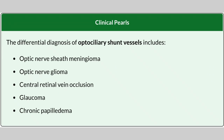The differential diagnosis for optociliary shunt vessels: the most important cause is optic nerve sheath meningioma. The second is glioma. They can also be seen in central retinal vein occlusion, glaucoma, and chronic papilledema.